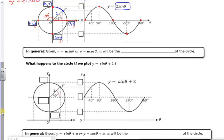So it says here, in general, if it's A sine theta, or A cos theta, A will be the radius, or a posh word is the amplitude of the circle.